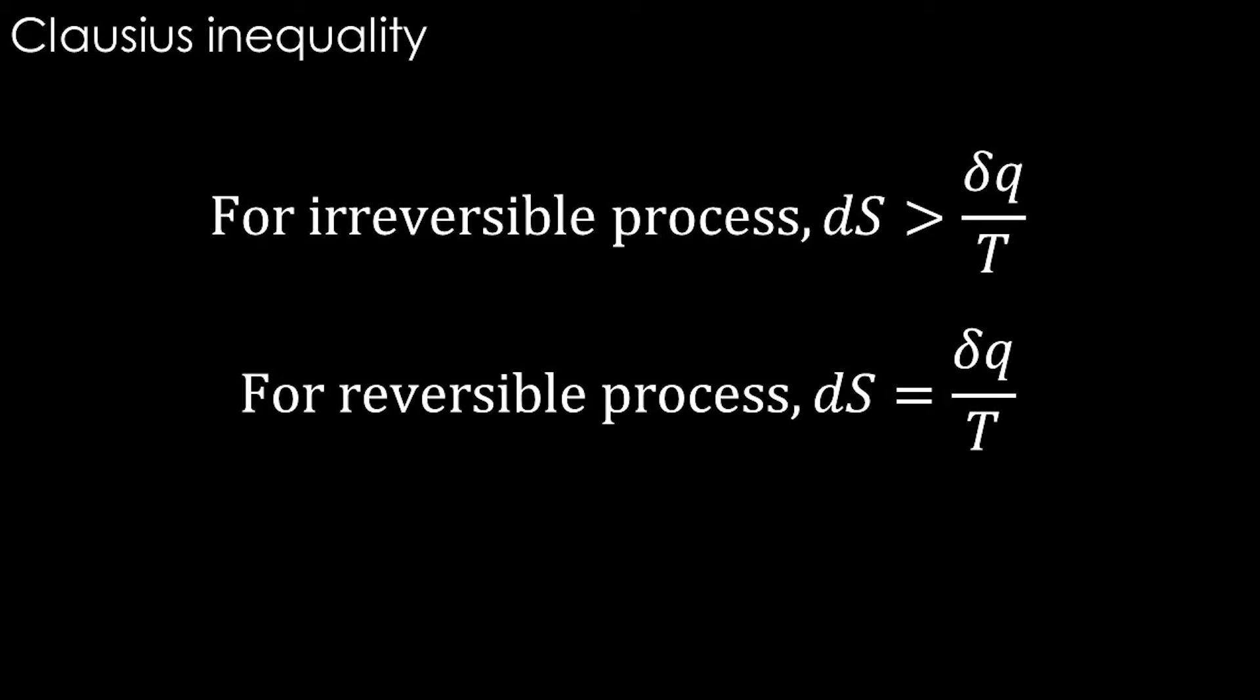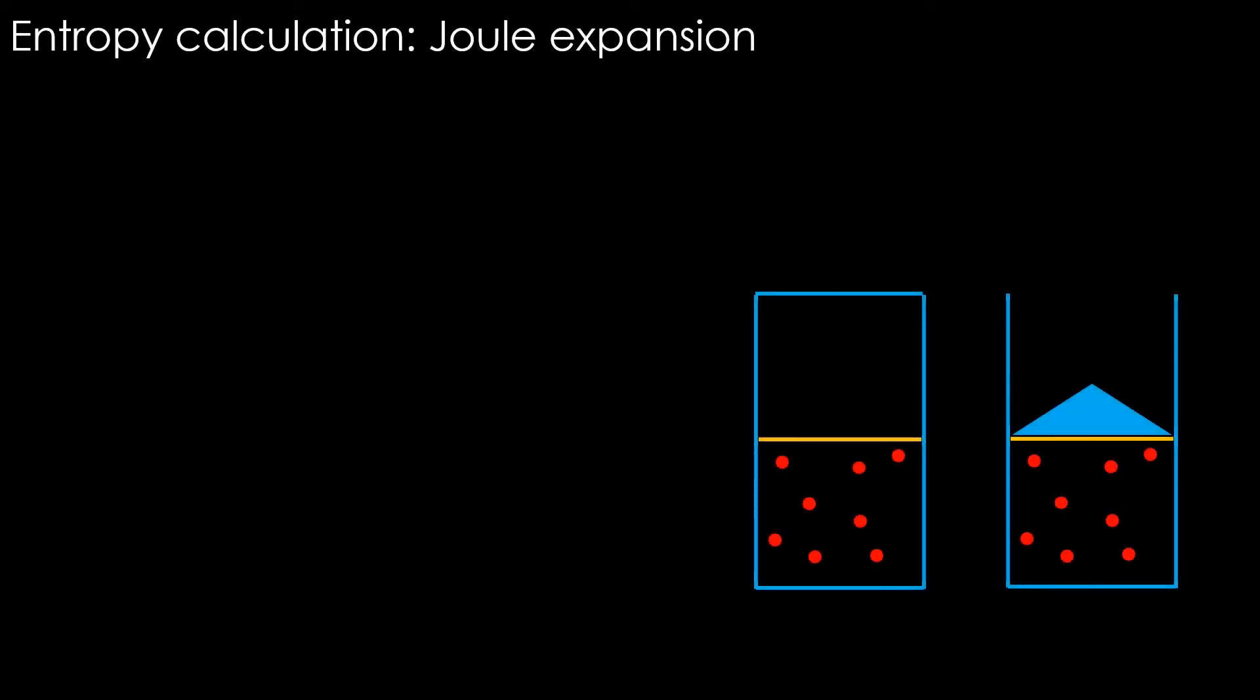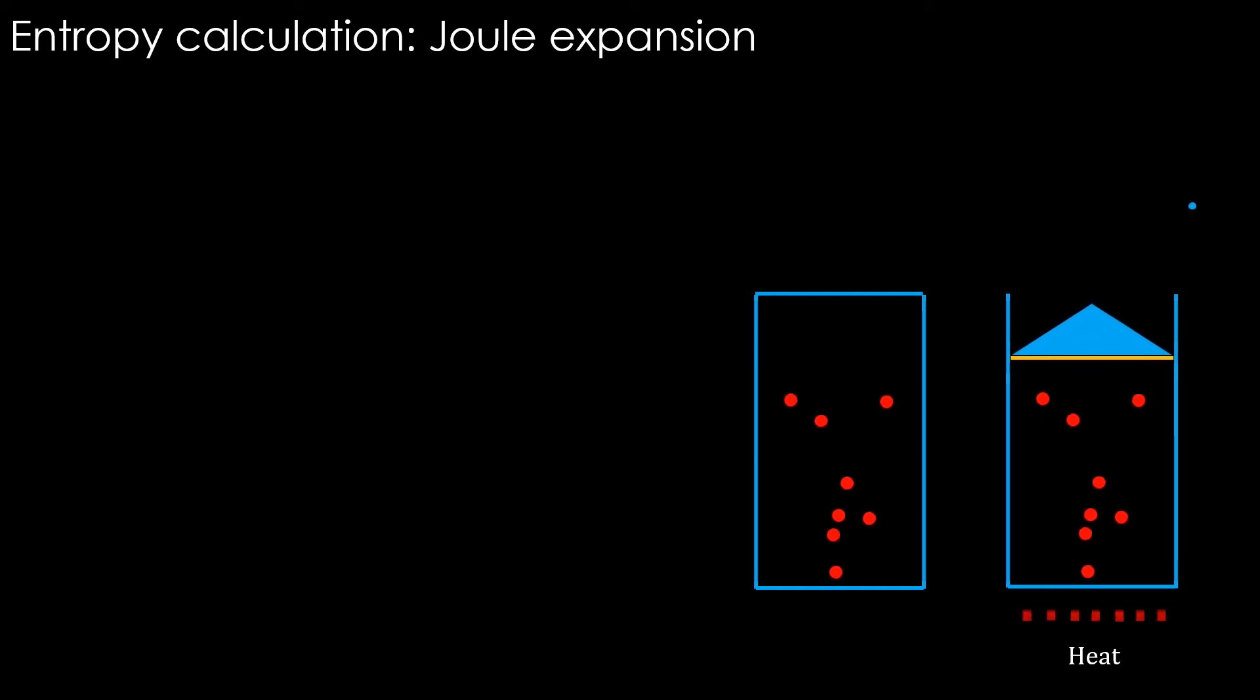Since the entropy change depends only on the states and not the path between the states, we can try to think of achieving the same change in state through reversible process. Therefore, we can use the q divided by T formula. Here is how we can do that. In the left, we have the Joule expansion. In the right, the same change is achieved considering a reversible isothermal expansion.